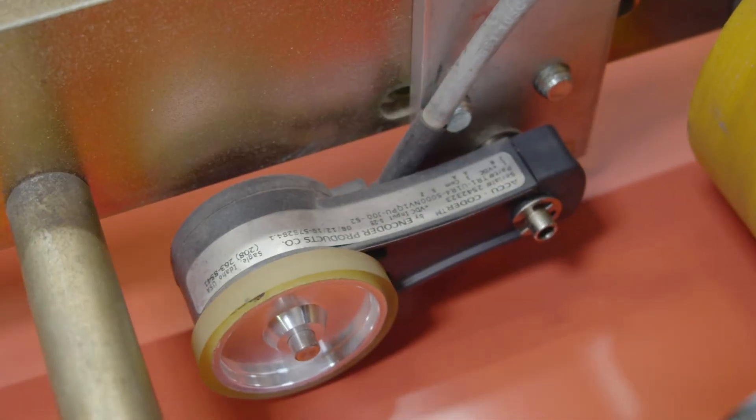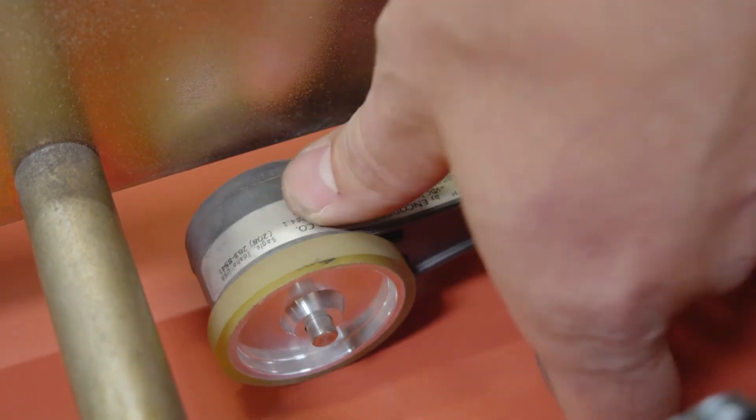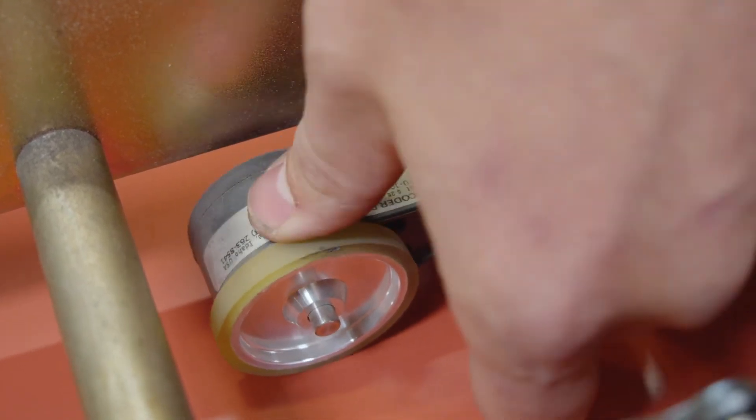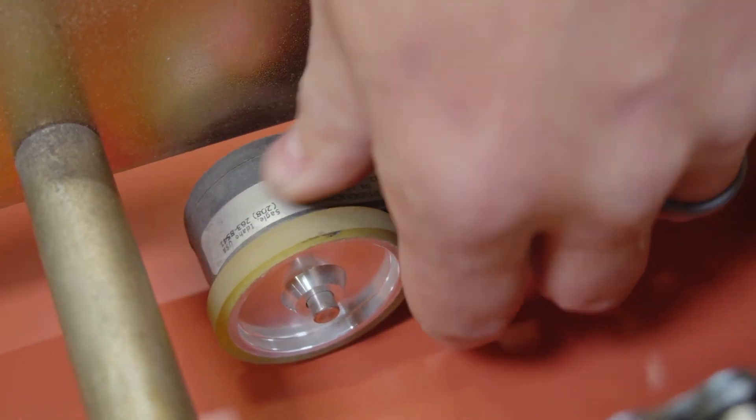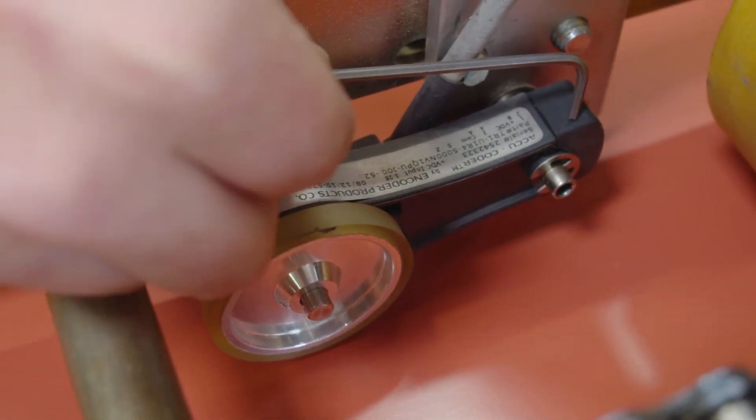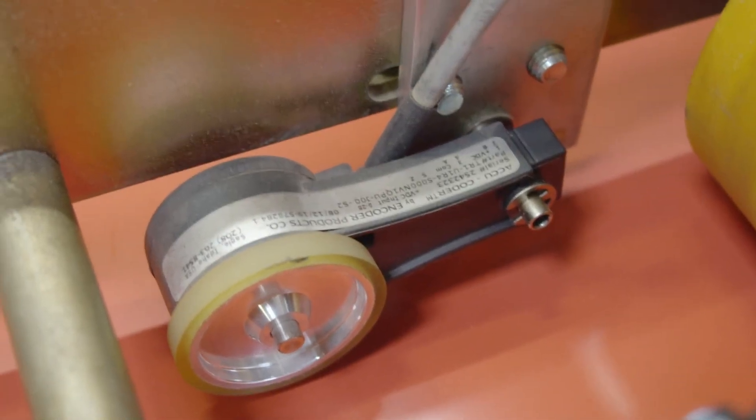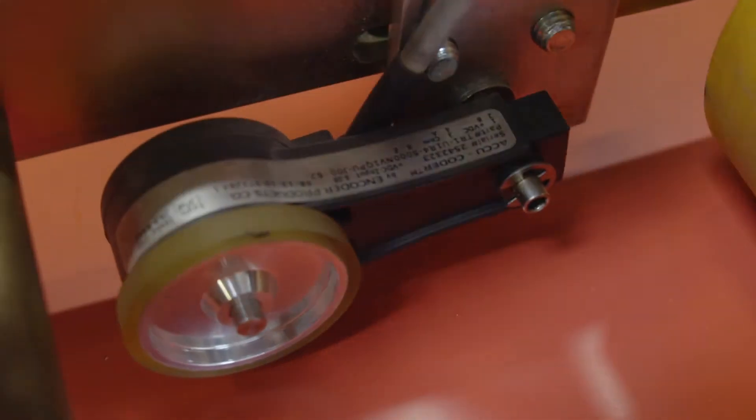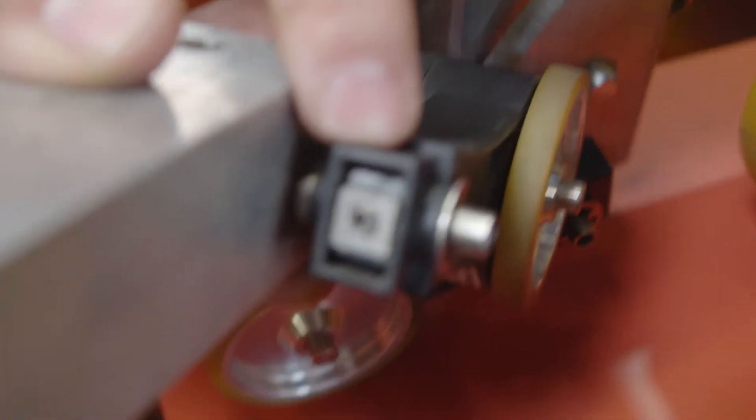So now that we have our mounting bolt snug, you can see we still do not have pressure against the material. At this point, we want to remove the rubber cap on the top of the encoder, exposing this fastener.